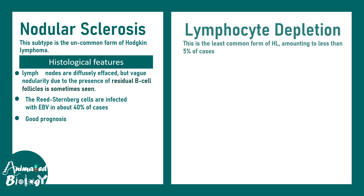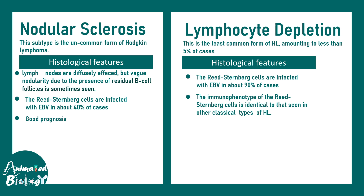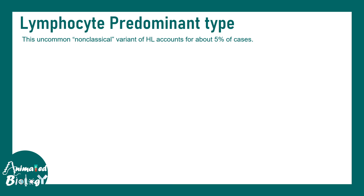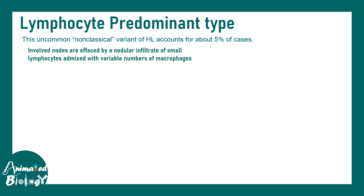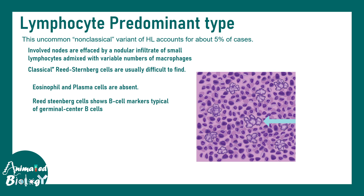Lymphocyte depletion is strongly associated with EBV infection in more than 90 percent of cases, and the immunophenotype of the Reed-Steinberg cell is largely identical to the other classical types. Lymphocyte predominant type is rare but different — it involves several nodules inside the lymph node. Classical Reed-Steinberg cells are difficult to find here. Eosinophils and plasma cells are absent. This subtype is non-canonical because the Reed-Steinberg cells express B cell markers typical of the germinal center and are positive for CD20 and BCL6, but negative for CD15 and CD30.